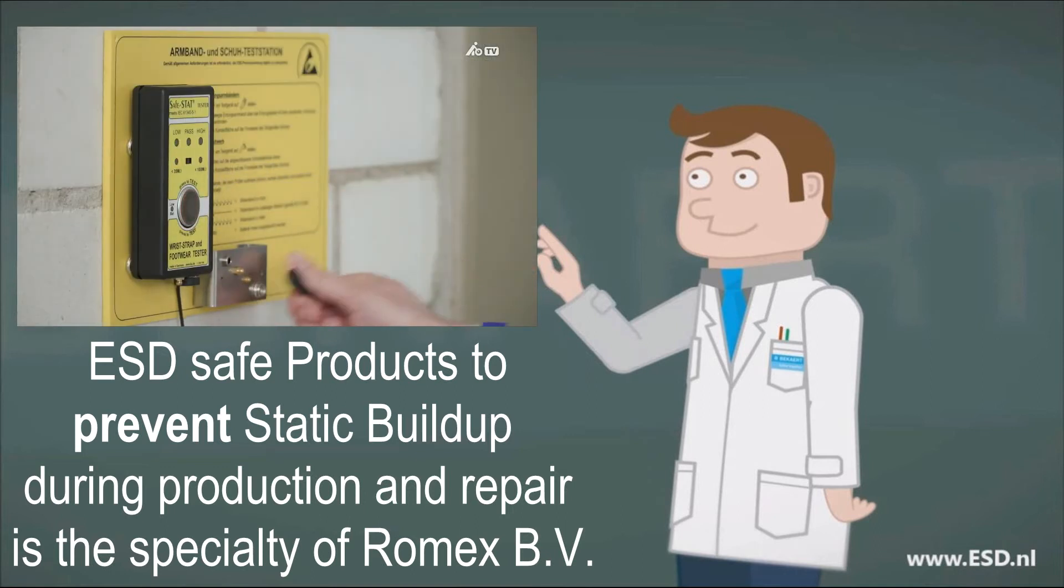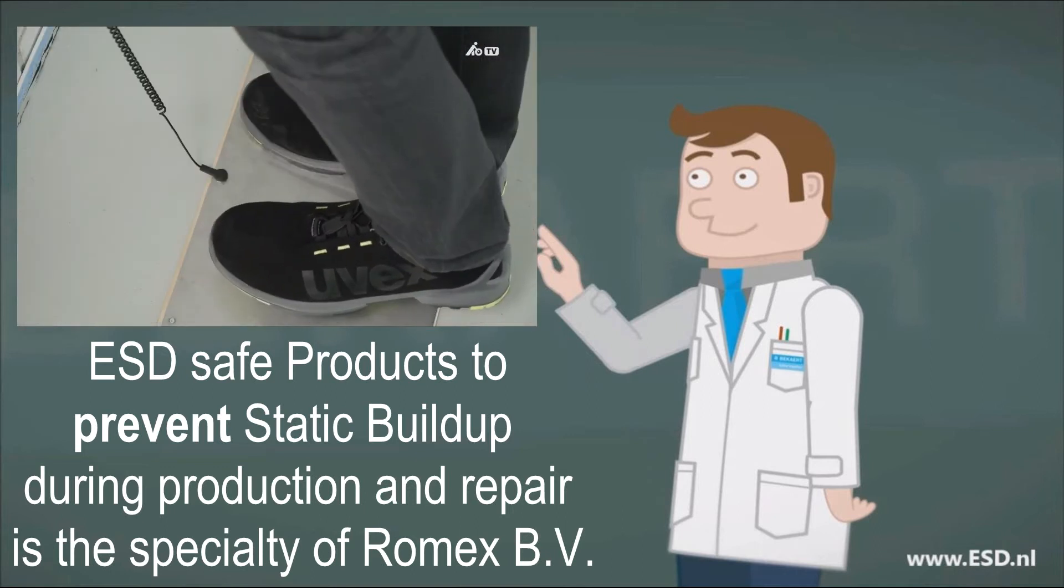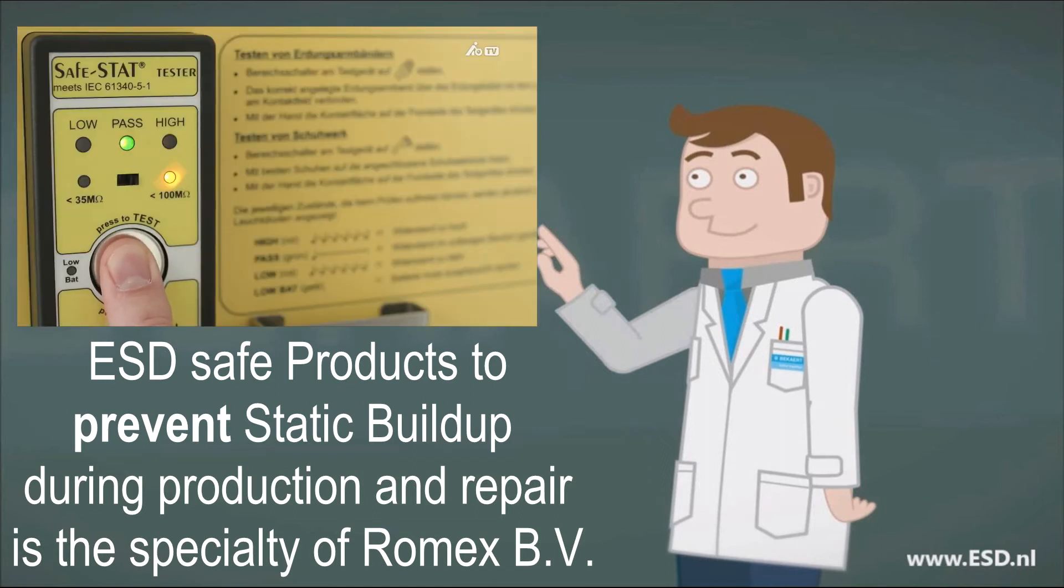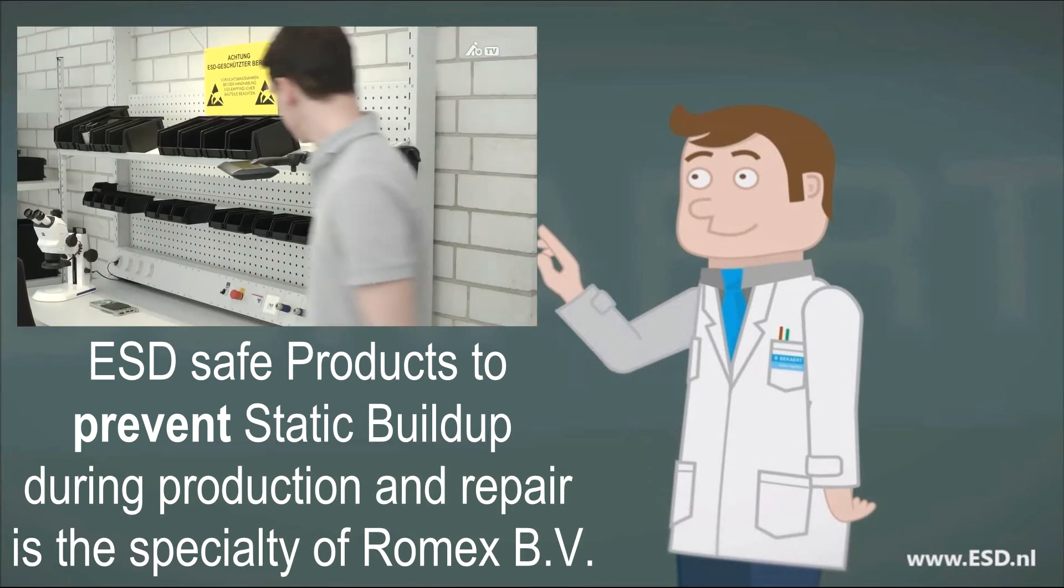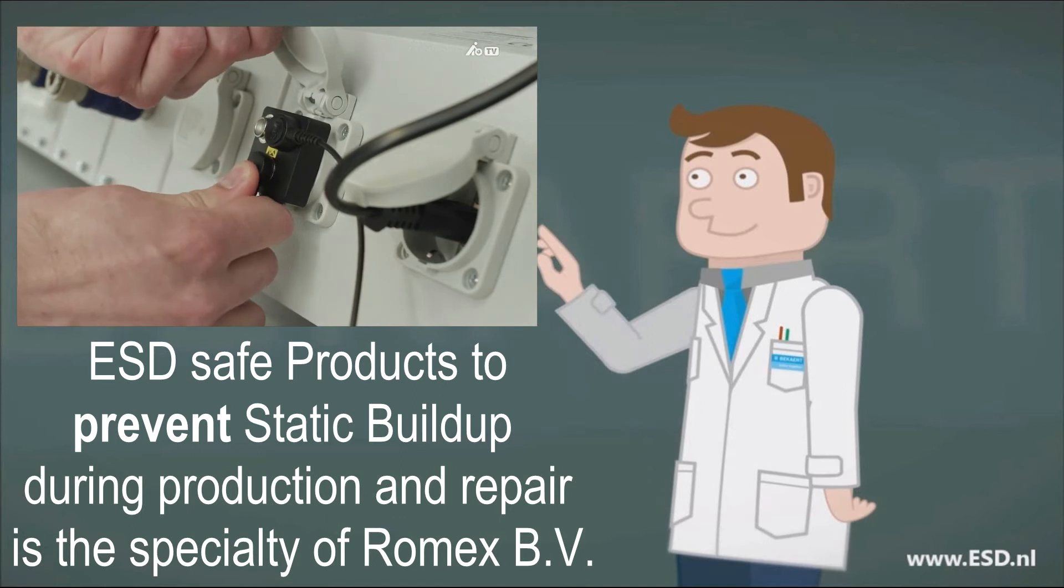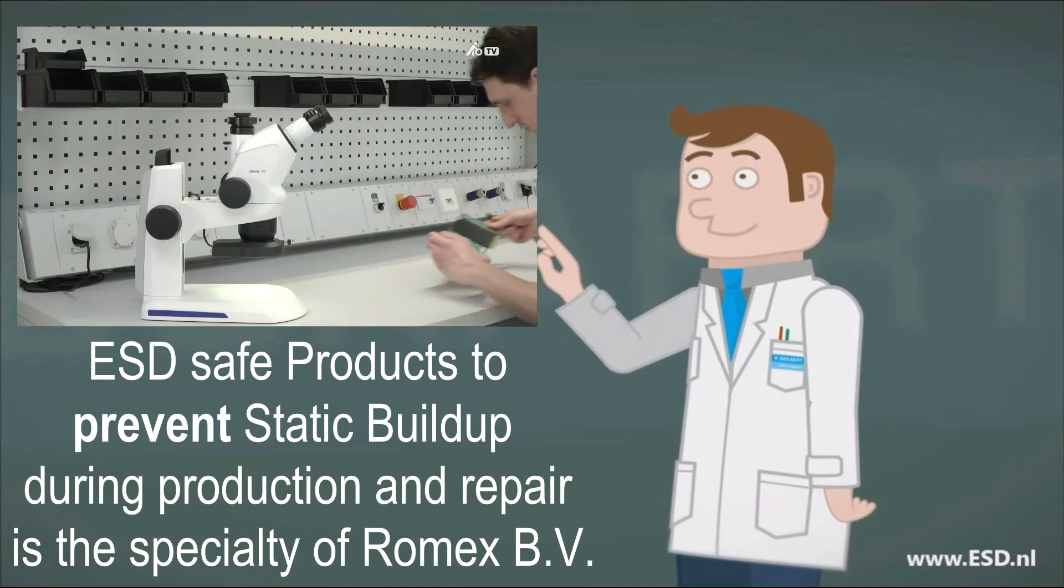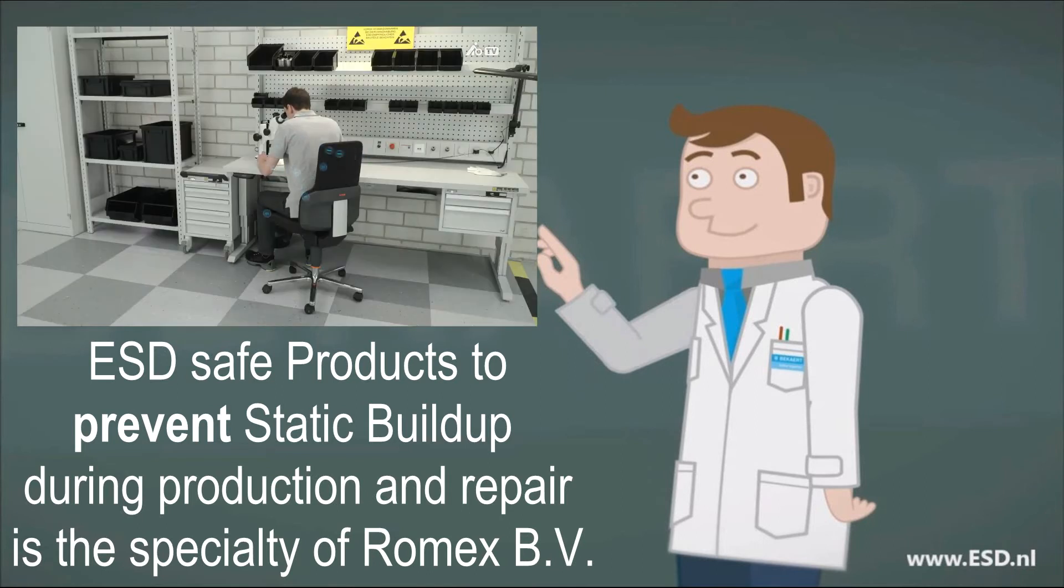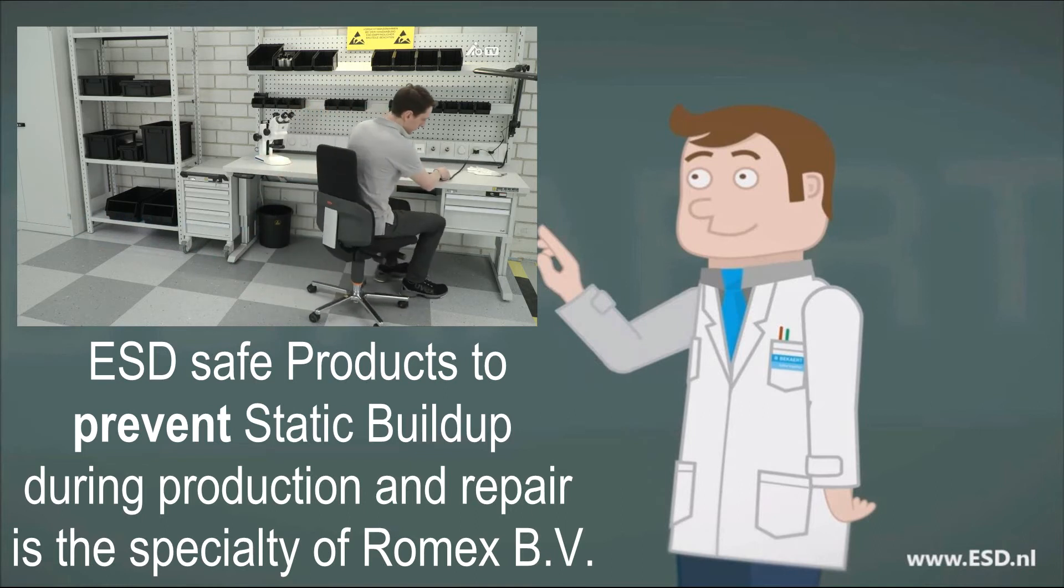Personal ESD protective workwear has to be checked every day before entering the EPA to ensure it's working correctly. If it is, the employee may enter the EPA and start work. After connecting the wrist strap to a grounding component, the electrostatic charge is slowly dissipated via the work surface and the grounding cable so the workstation stays charge neutral.